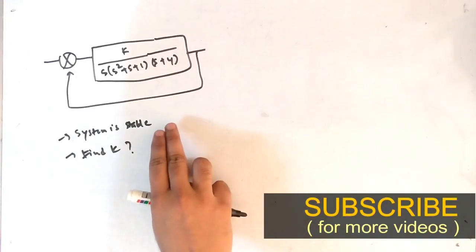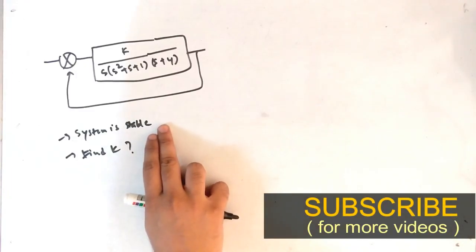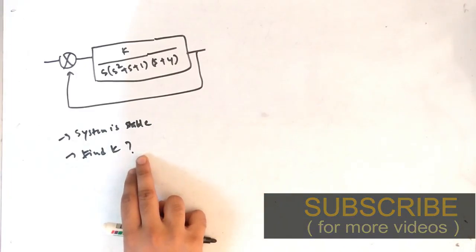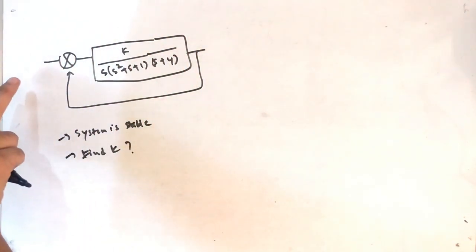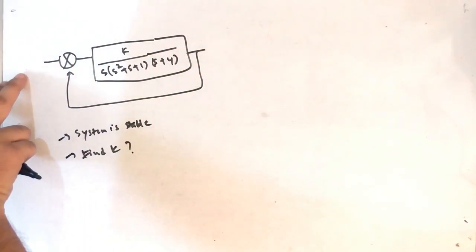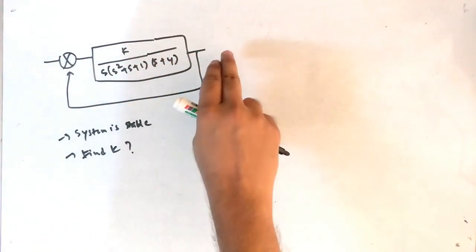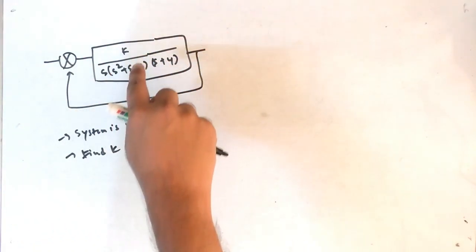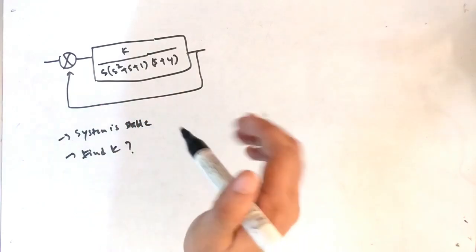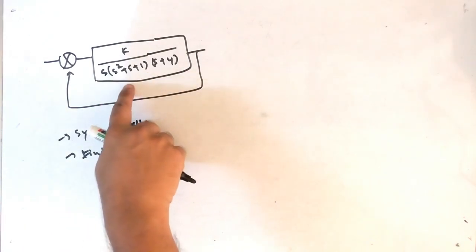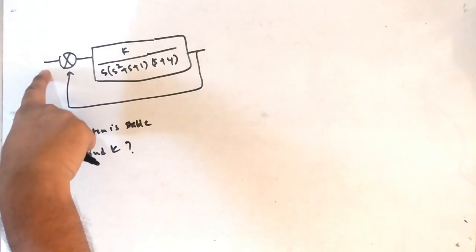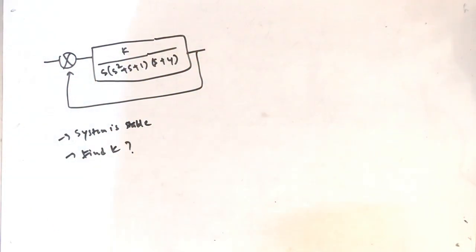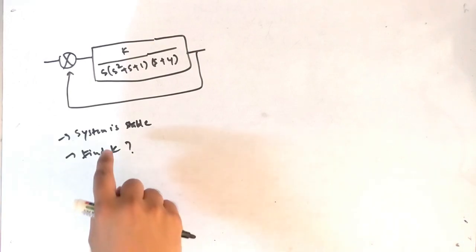In this video, the given part is that the system is stable and you have to find the value of k. This is the block diagram which shows input and output, where this is the gain g and this is the feedback h. The first point is that the system is stable.